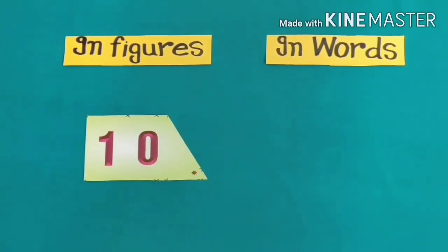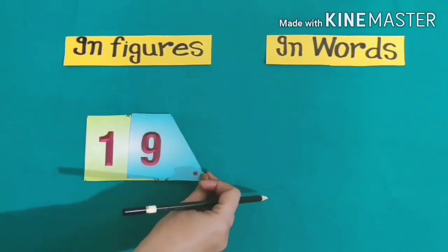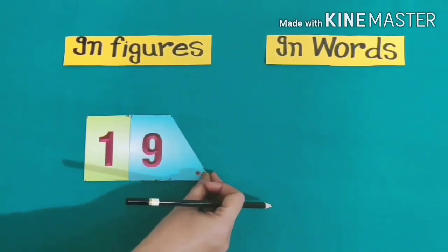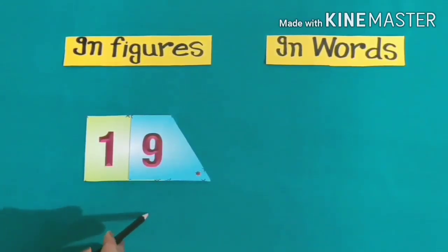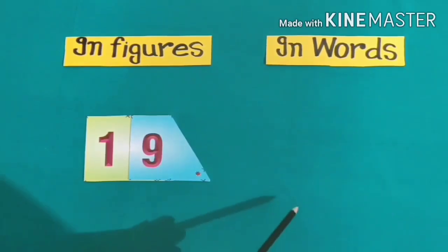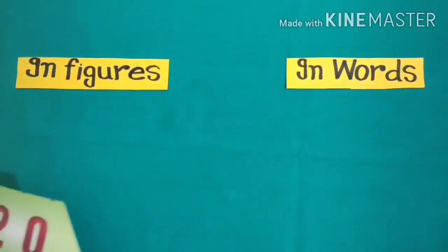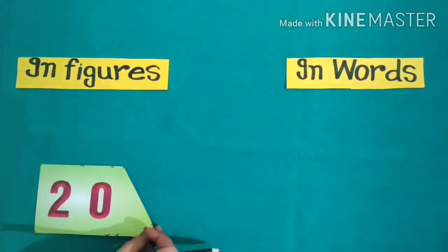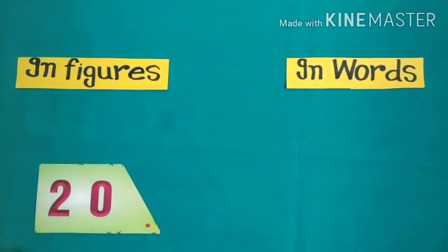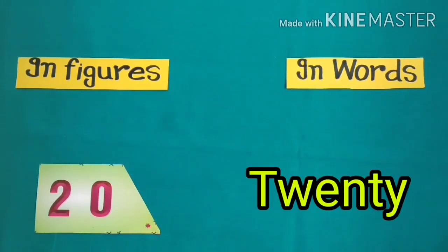Students, next one is 10 + 9 = 19. In words we will write it like this: nineteen. Students, our next number is 20. In words we will write it like this: twenty.